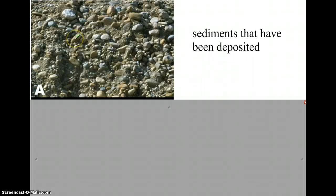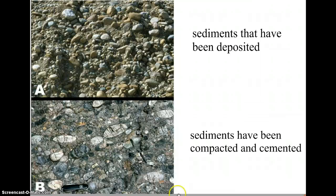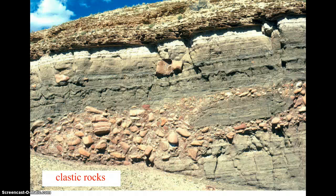Here's a picture of some sediments that have been deposited. If they were to be compacted and cemented, they would solidify and become a sedimentary rock. Similarly, the round stones in this picture — if compacted and cemented — would also turn into sedimentary rock. And here you can see rocks that have been compacted and cemented, with large clasts and large grains making up that rock.